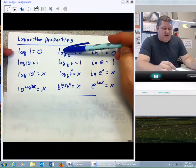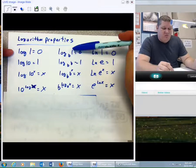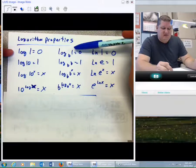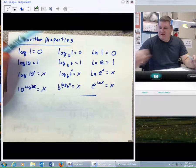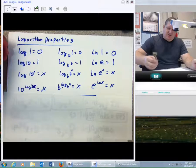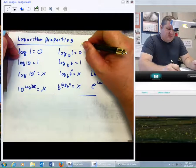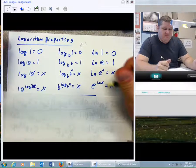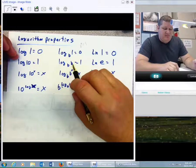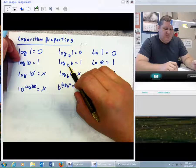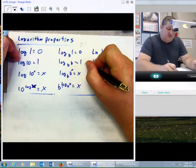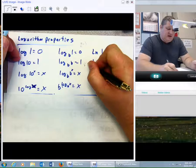If I have log base b, log base anything of 1, the answer is 0, because it says how many b's does it take to make 1? The answer is the only way you make 1 is if I have b raised to the 0 power. b to the 0 power is 1. Here we have log base b of b equals 1, because it says how many b's does it take to make a b? The answer is b to the first equals b, so it's 1.